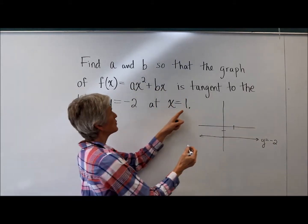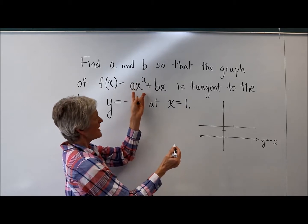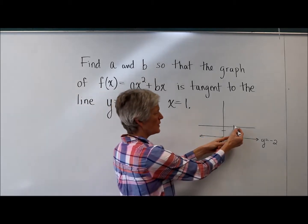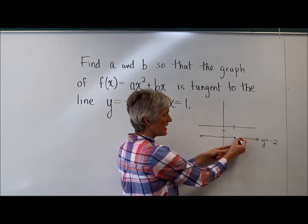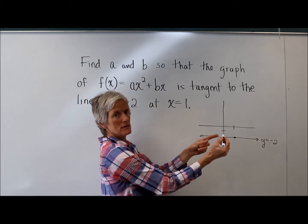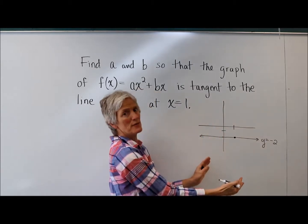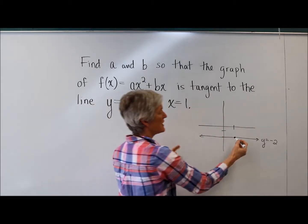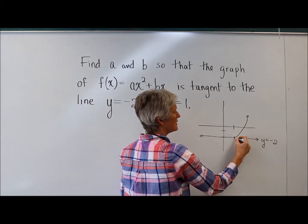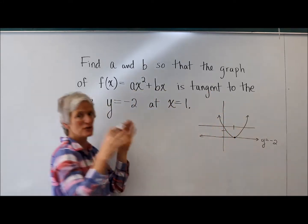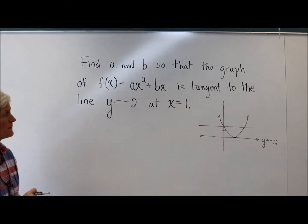So at x equals 1, this quadratic is tangent to this, so that means it has to be touching it. And if it's tangent, that means it's either opening up from there or opening down from there. I don't know if a is positive or negative. I'm just going to loosely sketch a graph like that.